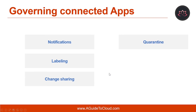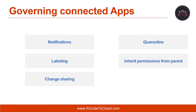Another action is Quarantine. This will help you put users in quarantine and allow self-service by moving the file to a user-controlled quarantine folder. The next action is Inherit Permissions from Parent. This governance action enables you to remove specific permissions set for a file or folder in Office 365, then revert to whatever permissions are set for the parent folder. And the last one is Trash, so that you can move the file to the trash folder.